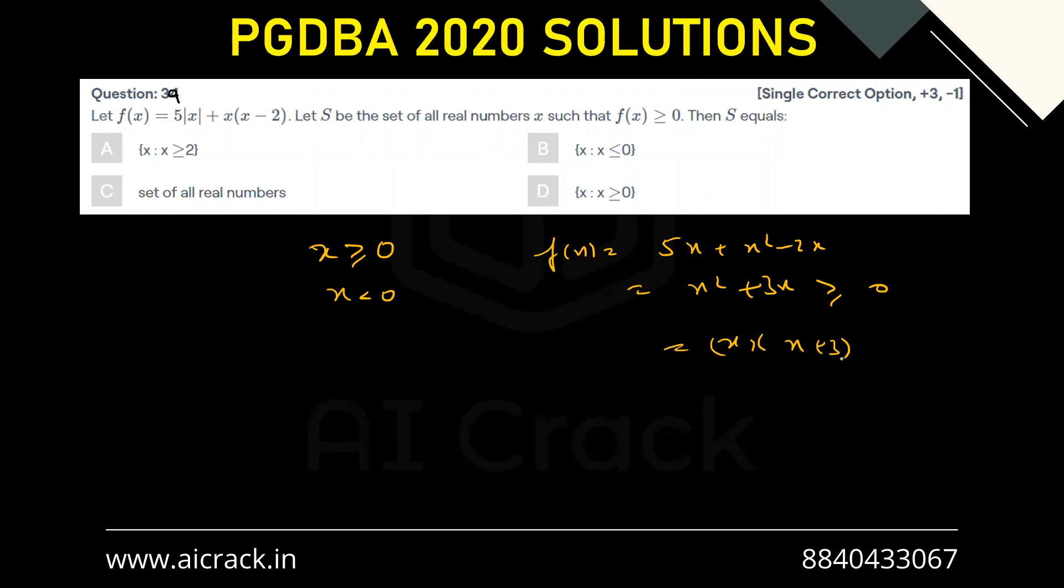x(x + 3) ≥ 0, which gives x ∈ (-∞, -3] ∪ [0, ∞). But we know the basic condition was x ≥ 0, so with this condition we get x ∈ [0, ∞) with a closed bracket at zero.